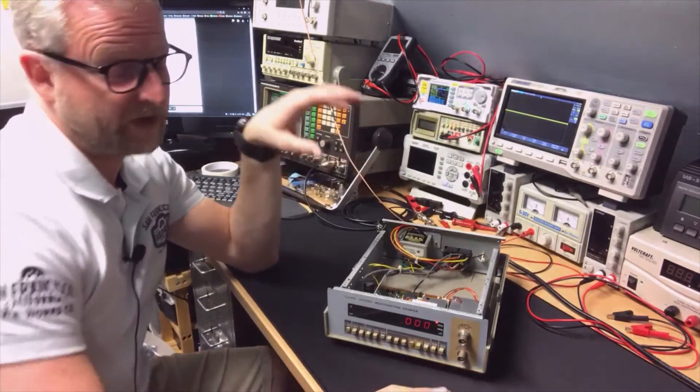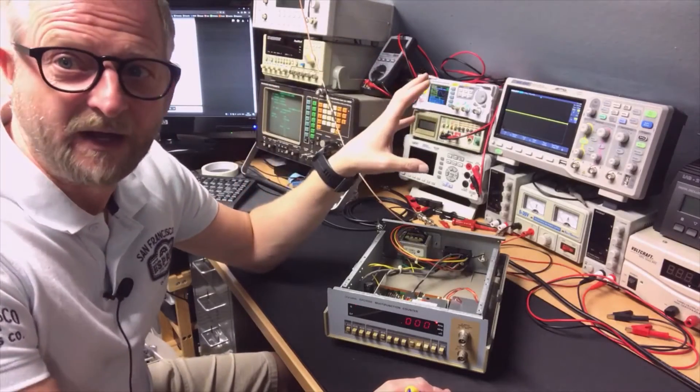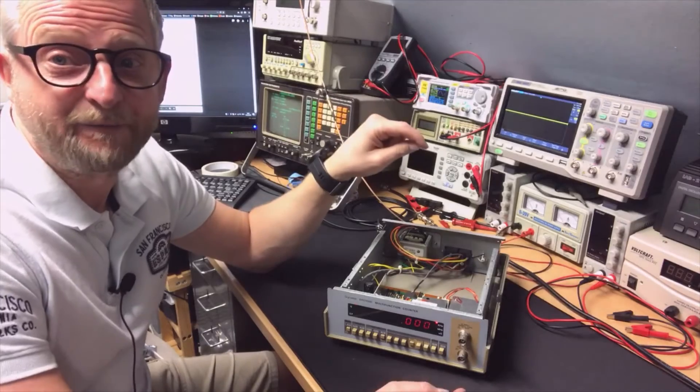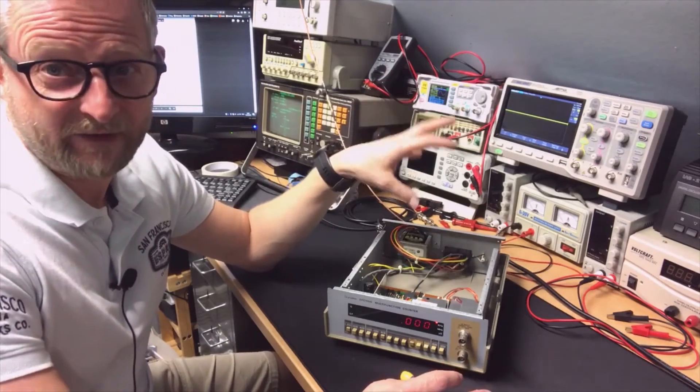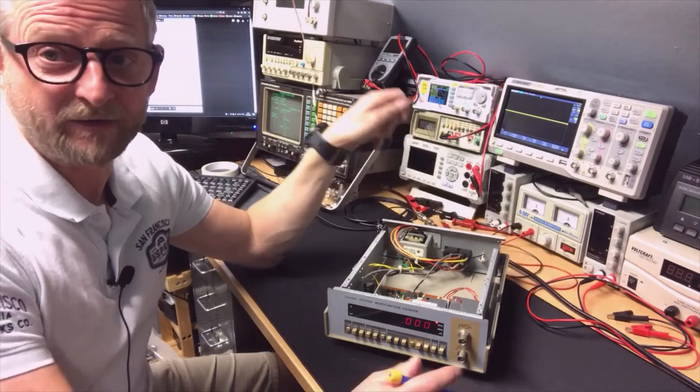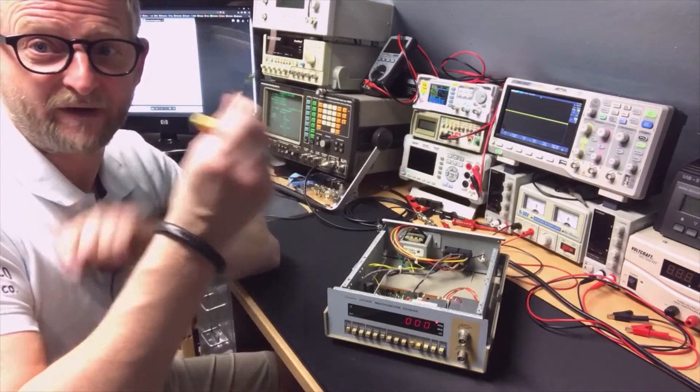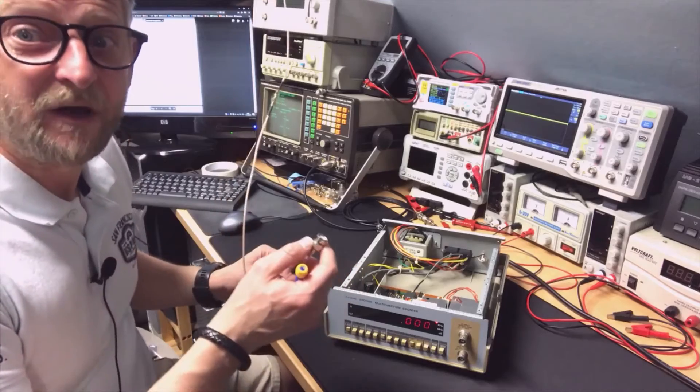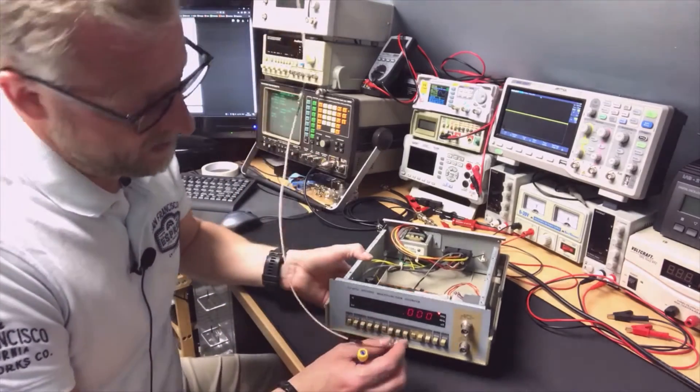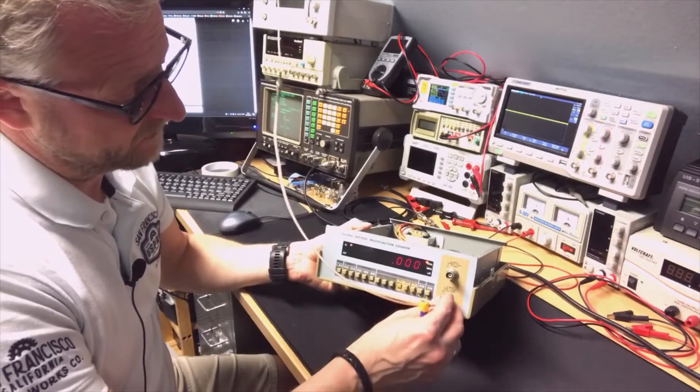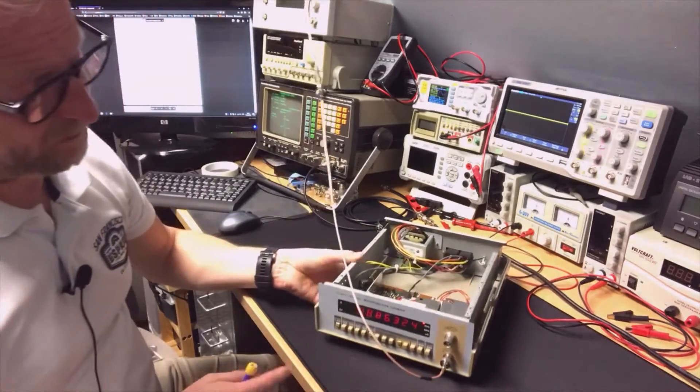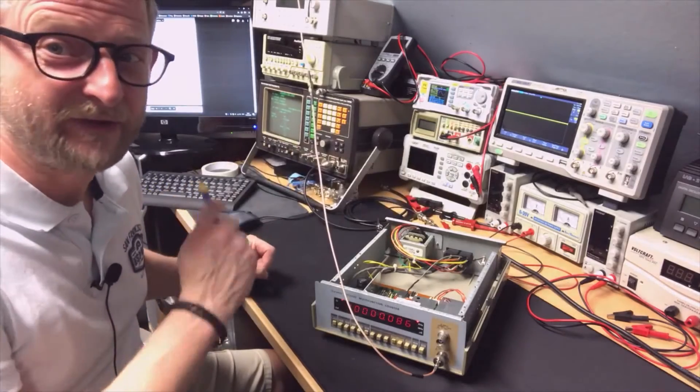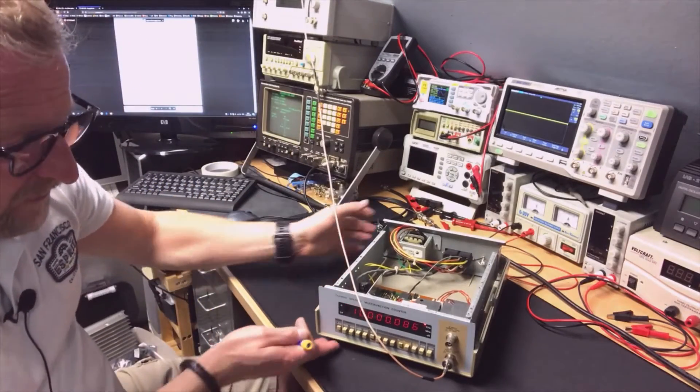There are different ways of doing the calibration. The first thing we're going to do is what you can do on any counter: feeding the 10 megahertz from your lab reference. In my case this is the GPSDO that I showed in my other video. That is good, that's the first method, method one. Then we're going to use the other methods just to check if we did it correctly.